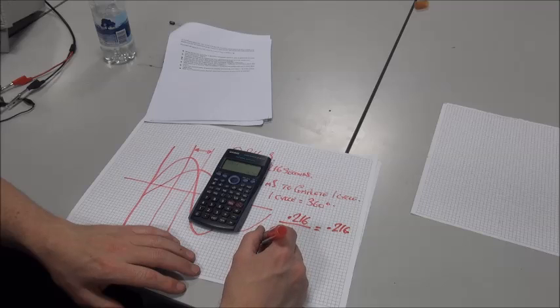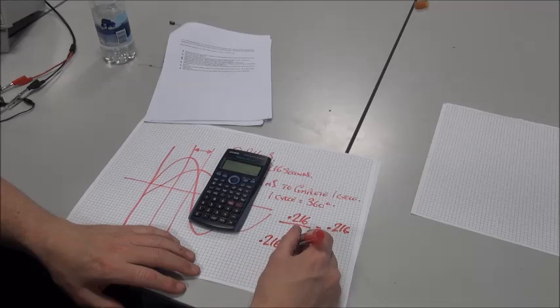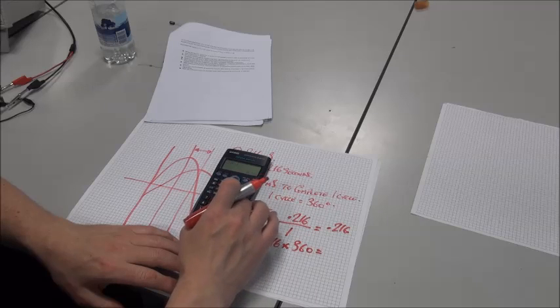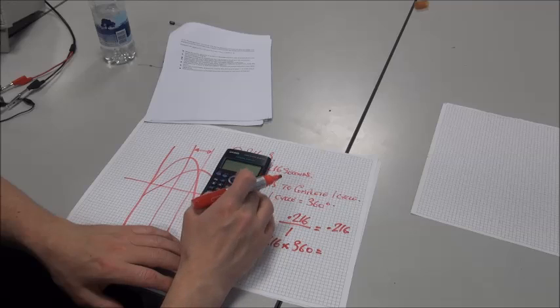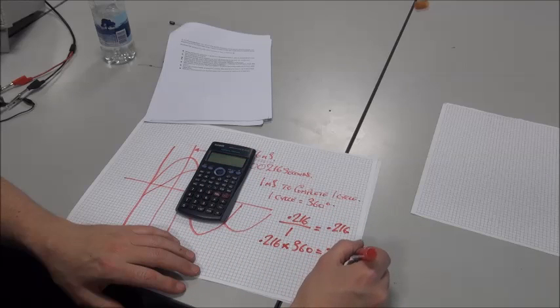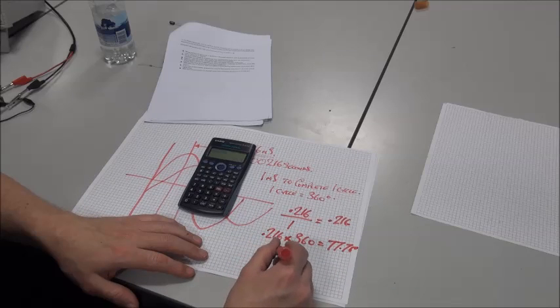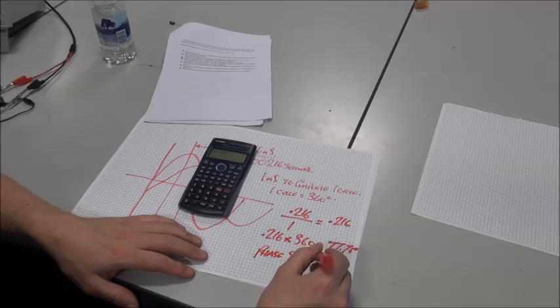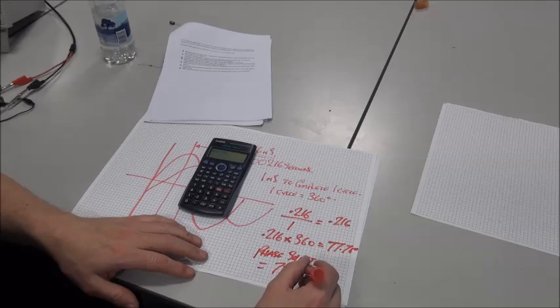obviously, 0.216 times 360 is equal to 77.76 degrees. So the phase shift is equal to 77.76 degrees,